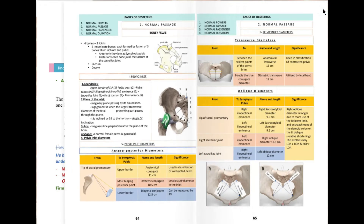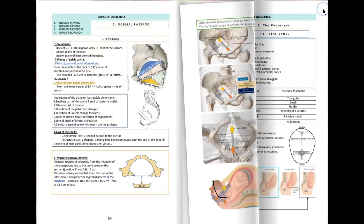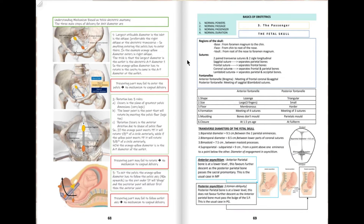This is page 68 in Intagrable Obstetrics. This page covers the mechanism of labor for any diameter. Anything entering the pelvis has to enter in the oblique diameter of the inlet, or the transverse diameter, but mainly in the oblique diameter. To exit the pelvis, it has to exit in the anterior-posterior diameter of the outlet.